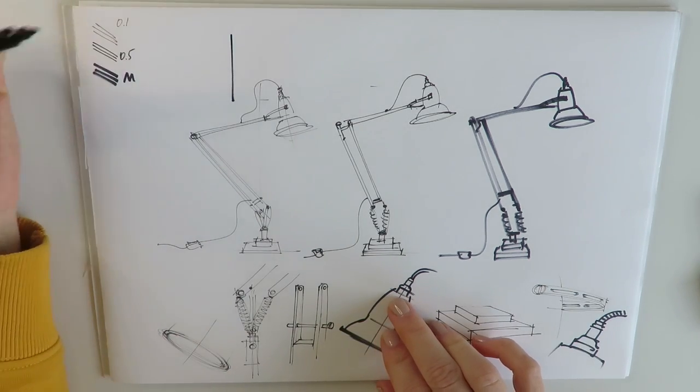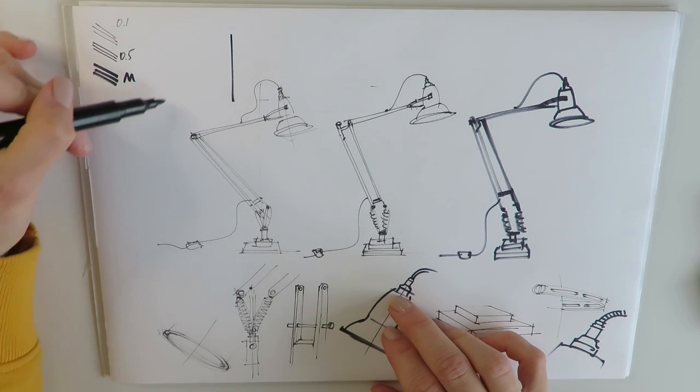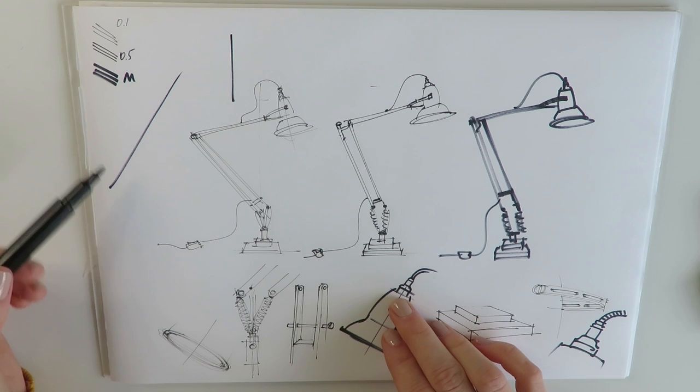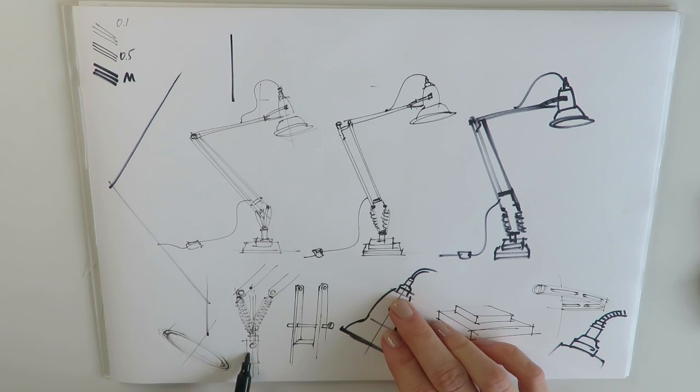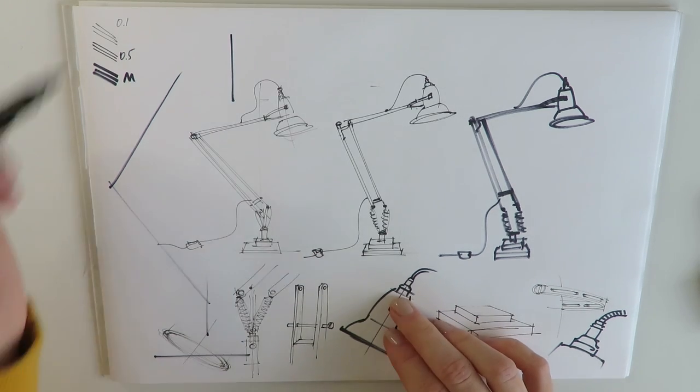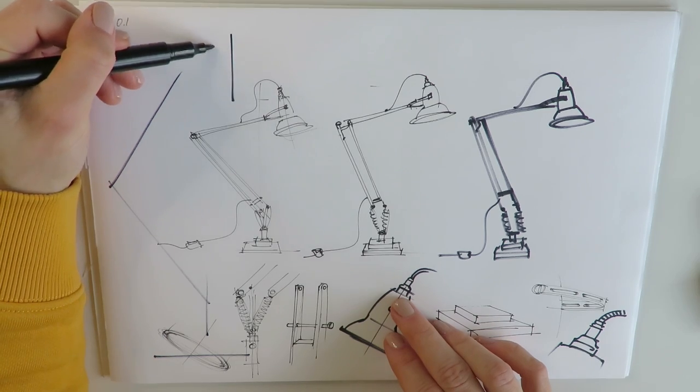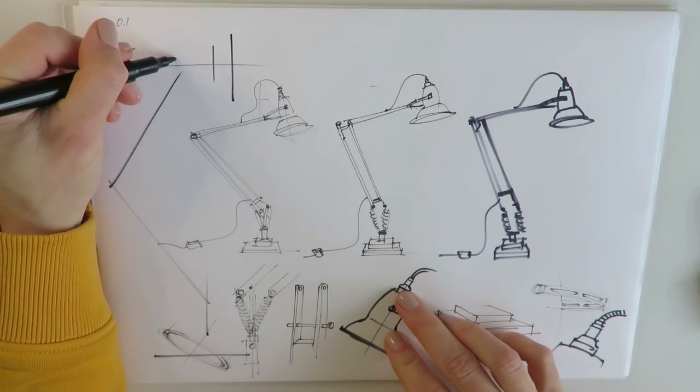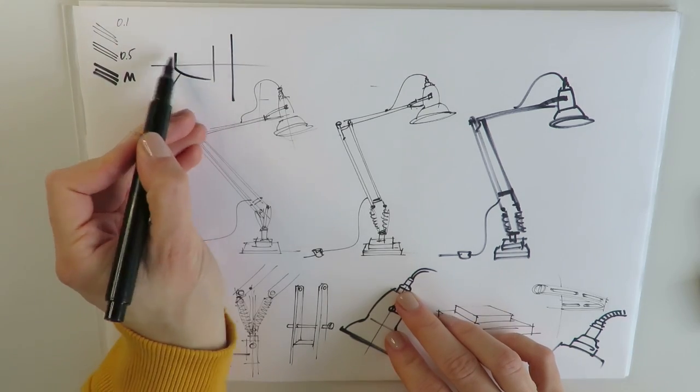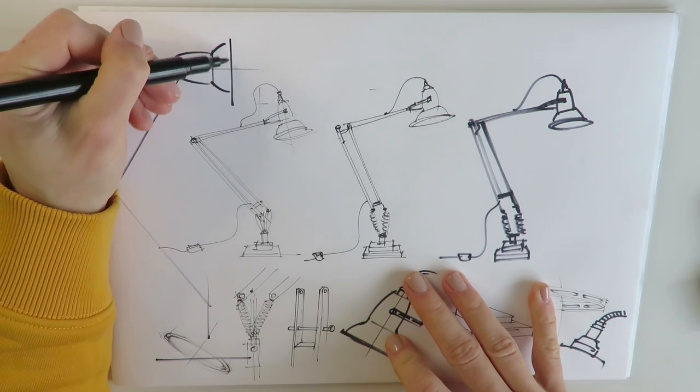By the way, the designer of the fixture, George Cadwardine, he was an engineer as well. And he developed an update to the industrial spring, one that not only allowed the lamp to adjust, but to also stay in its adjusted position. It was like a know-how, especially for the mid of the century. Remember, it was 1935.